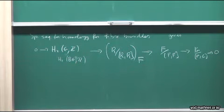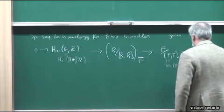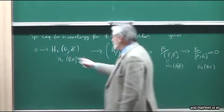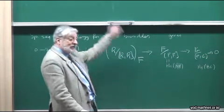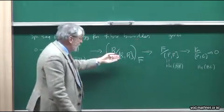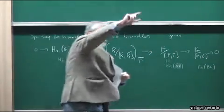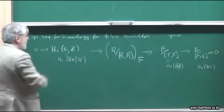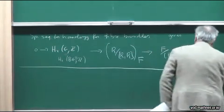At a certain moment I have to take the first homology of the fiber, where I use the transgression. The kernel of the transgression is computed as follows: you take cycles, take them around, and if they come back to themselves, this operation of transgression defines the second homology of G.